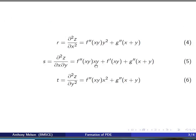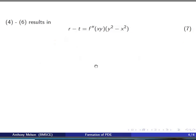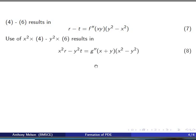So 4 minus 6 gives us r - t = f''(xy)·(y² - x²). Similarly, x² into 4 minus y² into 6 gives us equation 8. And 2 minus 3 gives us p - q = f'(xy)·(y - x).